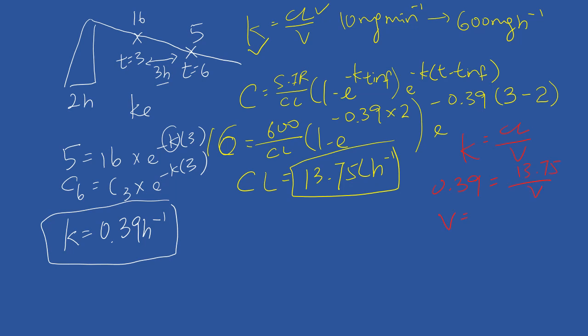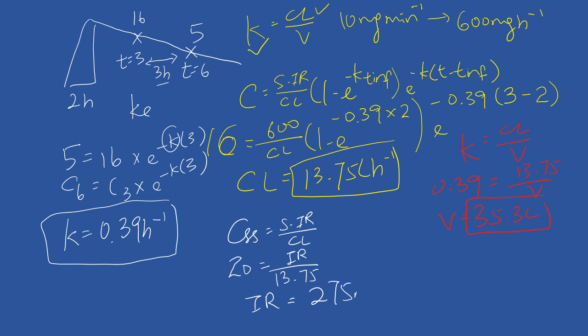For part three, to achieve a steady-state concentration of 20 mg per liter, use CSS equals (salt factor × infusion rate) divided by clearance. The target is 20, salt factor is 1, clearance is 13.75. Solving gives an infusion rate of 275 mg per hour.